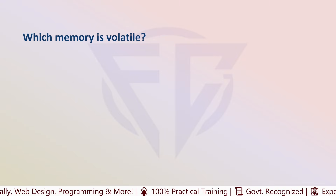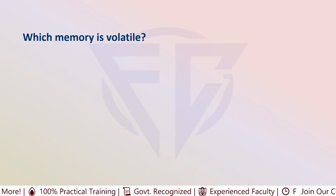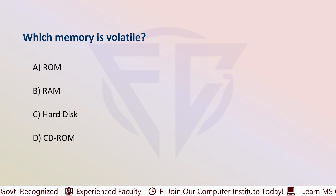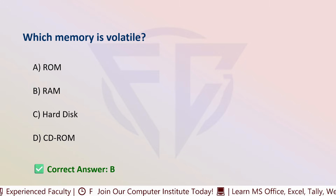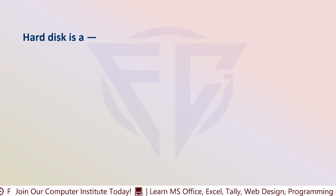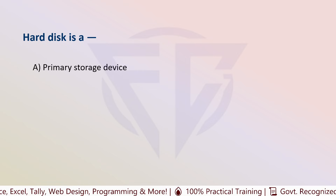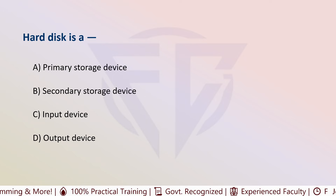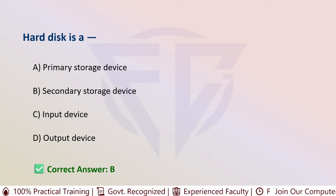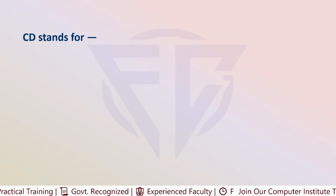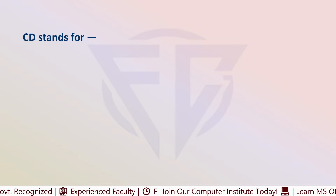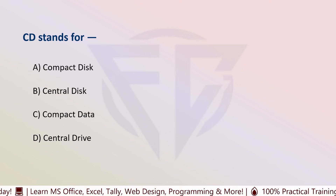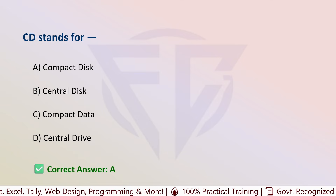The next question is: which memory is volatile? Options are: A) ROM, B) RAM, C) Hard disk, and D) CD-ROM. The correct answer is B, that is RAM. The next question: hard disk is a — options are: A) Primary storage device, B) Secondary storage device, C) Input device, and D) Output device. The correct answer is B, secondary storage device. The next question: CD stands for — options are: A) Compact Disc, B) Central Disc, C) Compact Data, and D) Central Drive. The correct answer is A, that is Compact Disc.